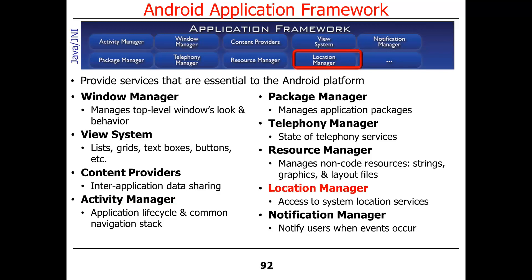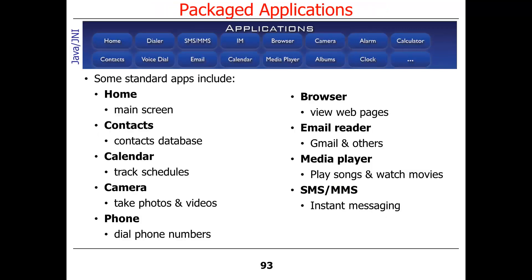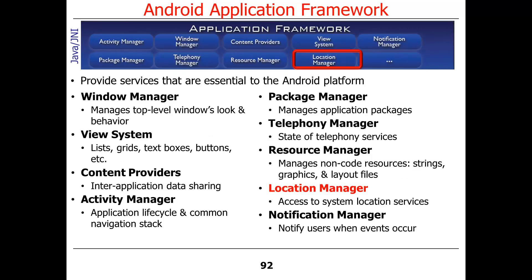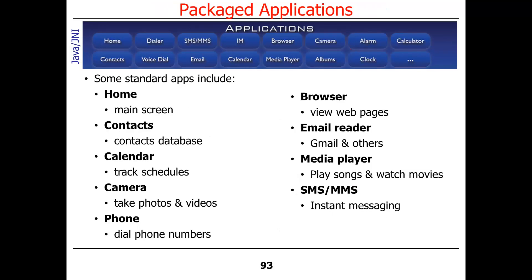Something that gives mobile phones their coolness is the Location Manager, which keeps track of where you are so you can use it with things like Google Maps for navigation, wayfinding, or viewing where you are or want to go. These are some of the things available on the phone that make life easier as a developer, and we'll talk about more as the course goes on.